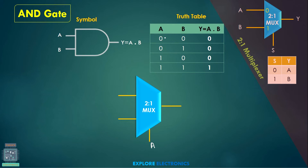In the truth table of the AND gate, if you observe, A is equal to 0 in these two cases. In these two cases, A is equal to 0 and the output will be obviously 0 irrespective of B. So when select line A is equal to 0, the first input will be selected, and I am going to pass 0 from here directly.